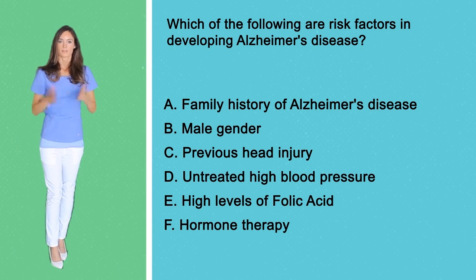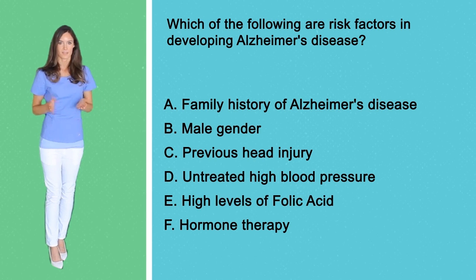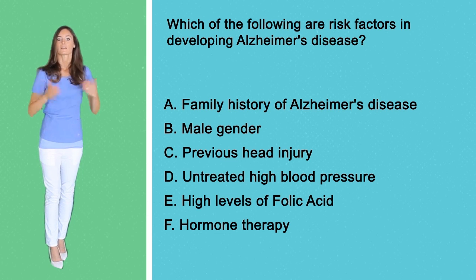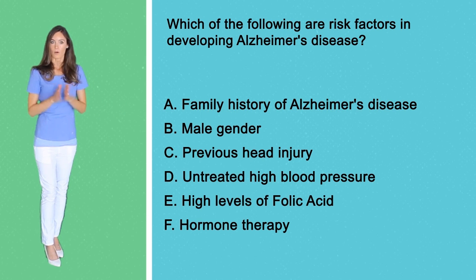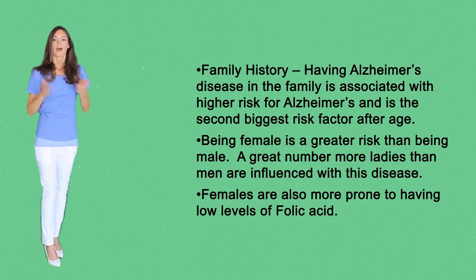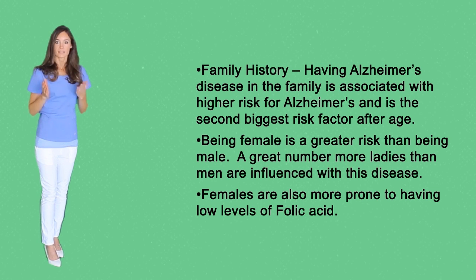This type of NCLEX question — select all that apply — probably causes nursing students the most stress. Take your time reviewing the choices and be sure to read each choice carefully, eliminating the ones that would not apply. Risk factors associated with Alzheimer's disease might include family history. Having Alzheimer's disease in the family is associated with higher risk, and is the second biggest risk factor after age.